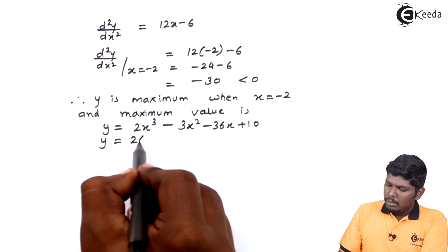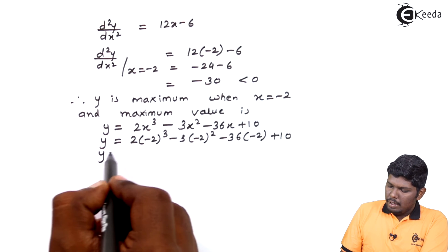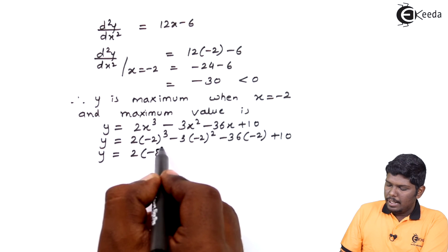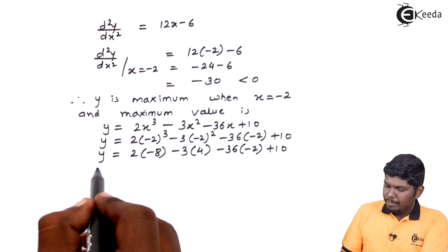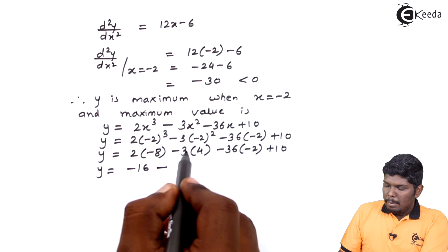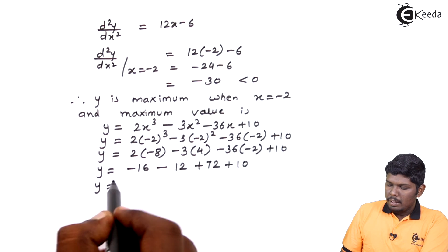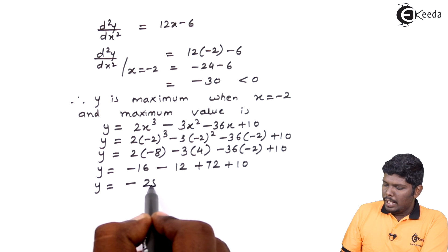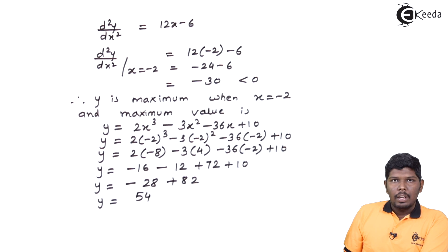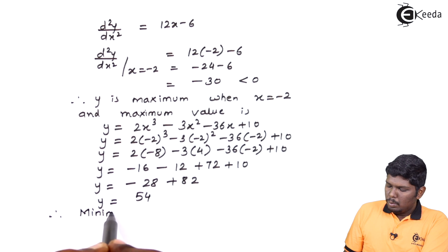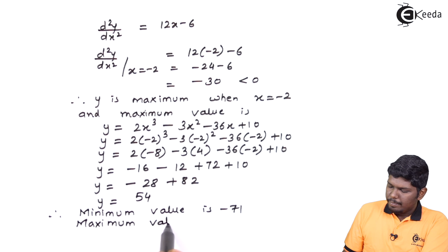The maximum value is found by substituting x = -2 into y = 2x³ - 3x² - 36x + 10. So y = 2(-2)³ - 3(-2)² - 36(-2) + 10 = 2(-8) - 3(4) + 72 + 10 = -16 - 12 + 72 + 10 = -28 + 82 = 54. The maximum value is 54. Therefore, the minimum value is -71 and the maximum value is 54.